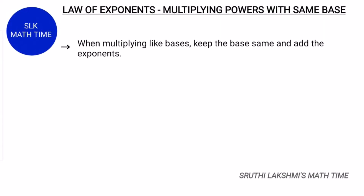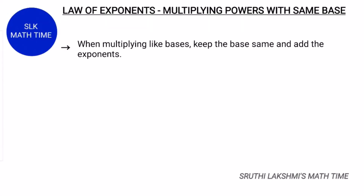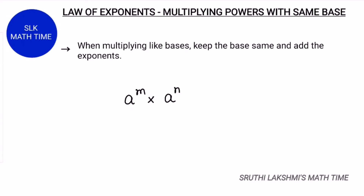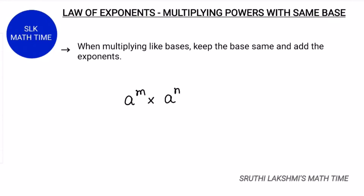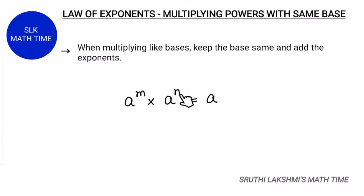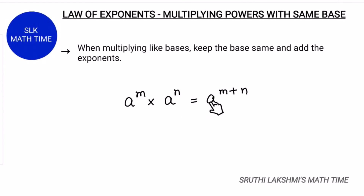When multiplying powers with the same base, you can simplify expressions with more than one exponent by combining the exponents. The only requirement is that the base must be the same. So it looks like this: a power m into a power n. When multiplying powers with the same base, we write the base as it is and then add the exponents — so m plus n — giving us a power m plus n.